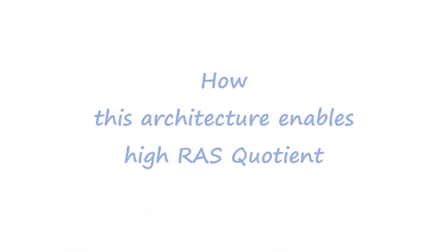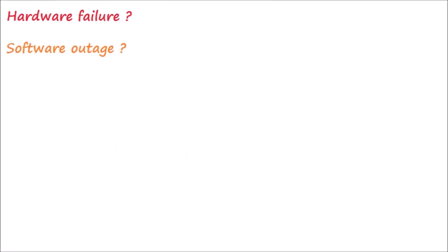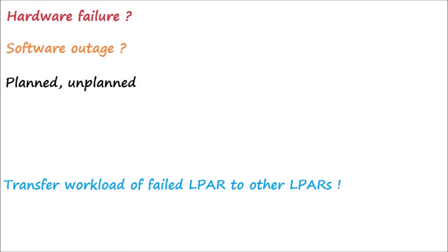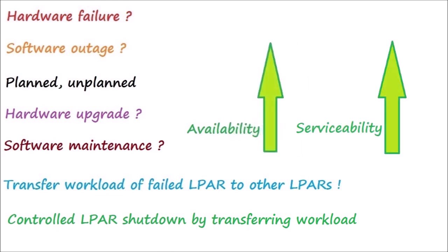Let's see how this mainframe architecture can achieve the best of RAS. In the event of a hardware or software outage, either planned or unplanned, workloads can be dynamically redirected to available servers, thus providing near continuous application availability. If any hardware and software maintenance or replacement is required, those can be done seamlessly without affecting the other LPARs. Again, we can redirect workloads to other LPARs. That enables a great serviceability index. As a result of having high availability index and high serviceability index, the reliability coefficient automatically goes very high.